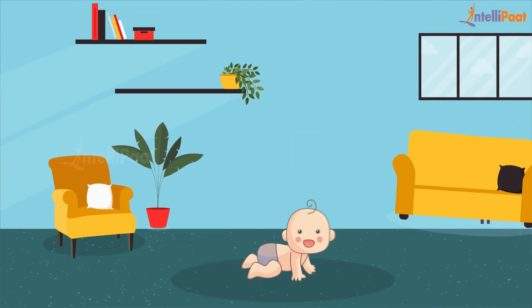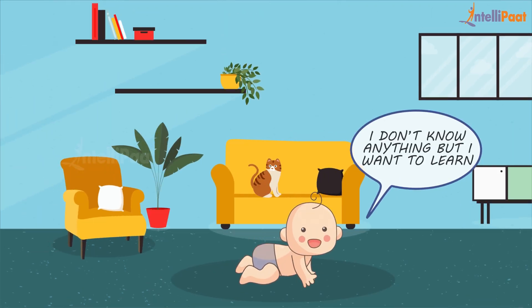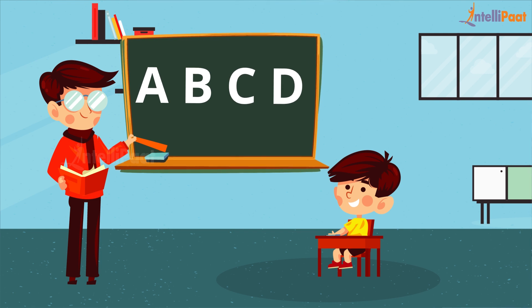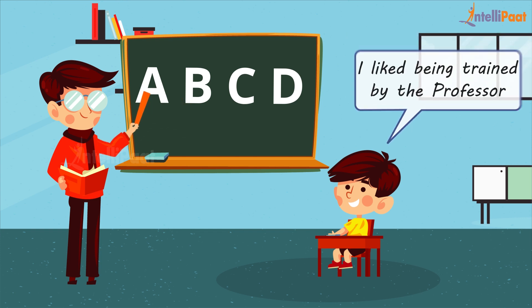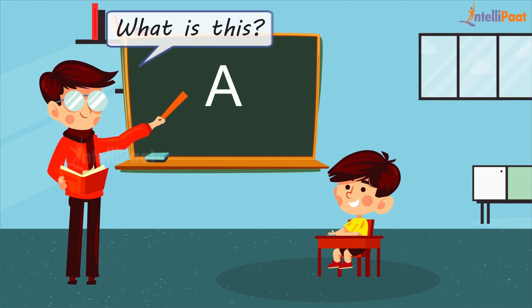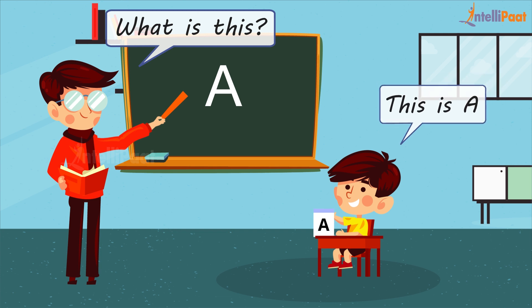Consider a newly born child who initially knows nothing, so he goes to school to learn. The teacher starts with the alphabets — the teacher shows a picture of the letter A to the child and tells him it's A. The teacher repeats this process again and again until the student learns all the alphabets. Here the student is being trained, and once the training is complete, the teacher conducts a test to verify how well the student has learned.